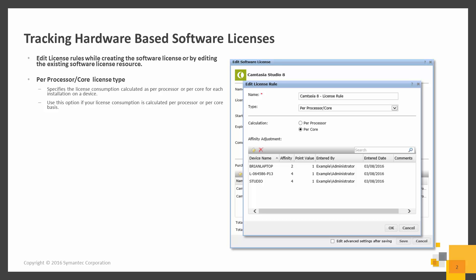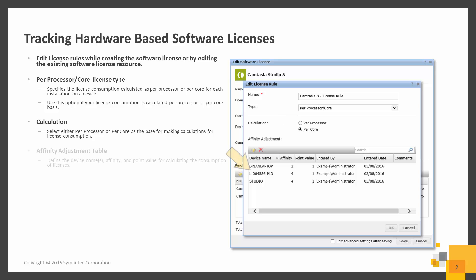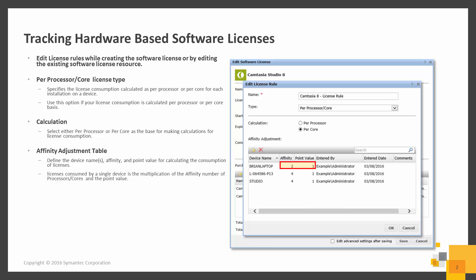The Calculation field is where you would select per processor or per core as the base for making calculations for the license consumption. The Affinity Adjustment table is where you would define the device name, affinity, and point value for calculating the consumption of licenses. The number of licenses consumed by a single license is the multiplication of affinity, number of processors or cores, and the point value.